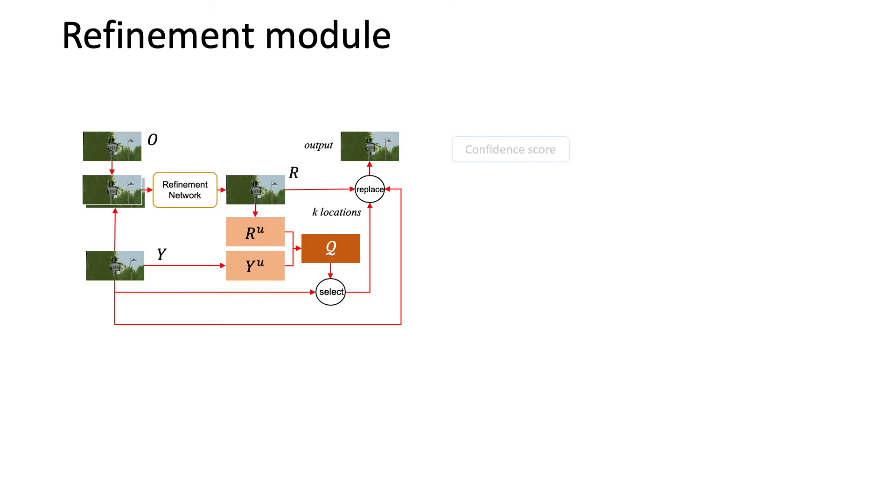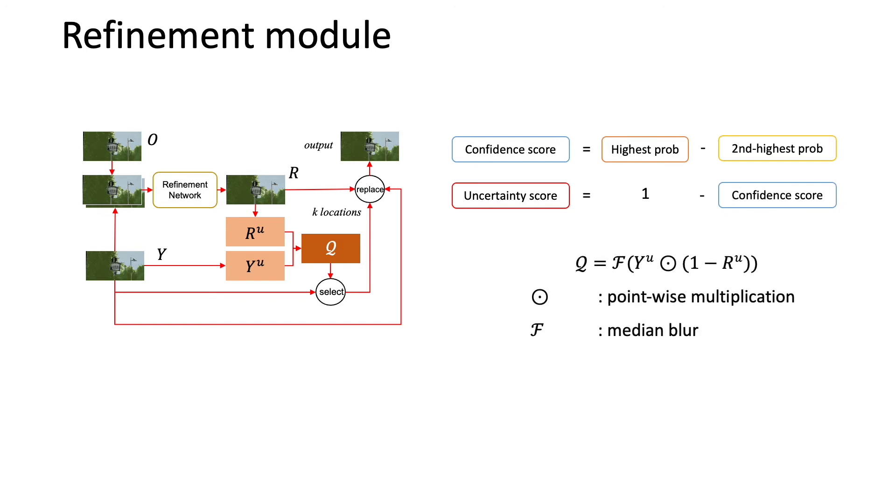For each pixel on y, the prediction confidence is the absolute difference between the highest and the second highest probability values. The uncertainty score is computed based on the confidence score such that the two scores must add up to one. The q score is calculated by this formula. It's a point-wise multiplication between y uncertainty and r confidence score. The output is then smoothed by median blurring.